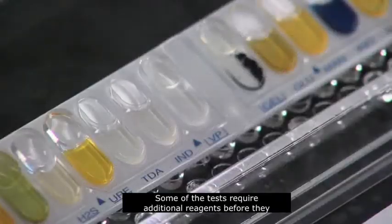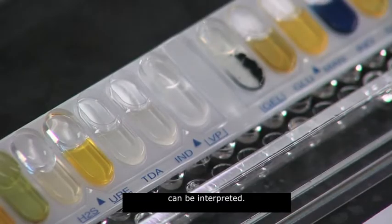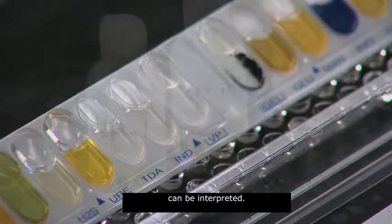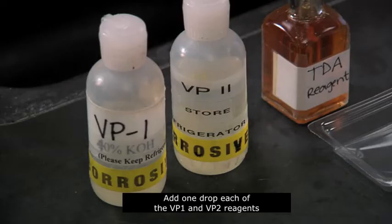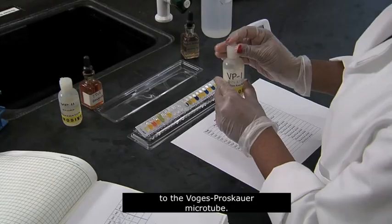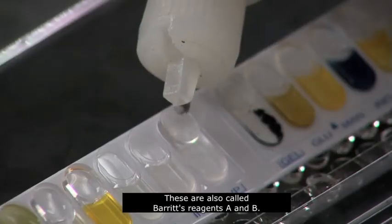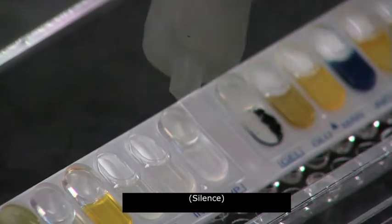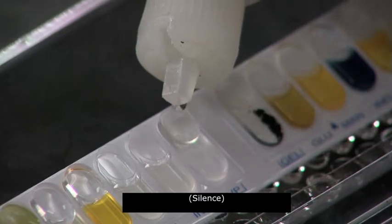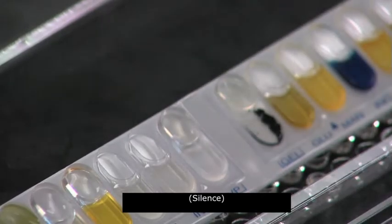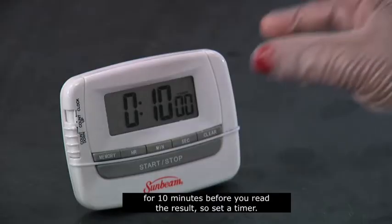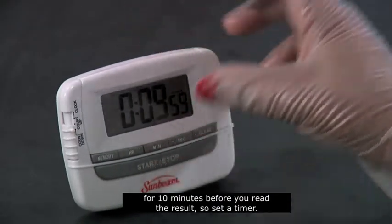Some of the tests require additional reagents before they can be interpreted. Add one drop each of the VP1 and VP2 reagents to the Vogue-Proskauer microtube. These are also called Barrett's reagents A and B. The reagents must react for 10 minutes before you read the result, so set a timer.